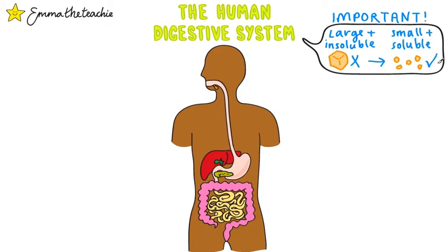The GCSE specification assumes knowledge of the digestive system from key stage 3 science, so it's important that we recap that first. Let's start by going over what each organ does.